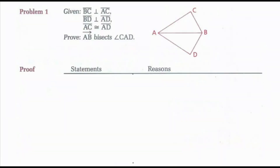Now looking at our sample problems, I have the following givens, and I want to prove that ray AB bisects angle CAD. To show that ray AB bisects angle CAD, I'd need to show that angle CAB is congruent to angle DAB. If these two angles are congruent, then ray AB would be the bisector of my whole angle.